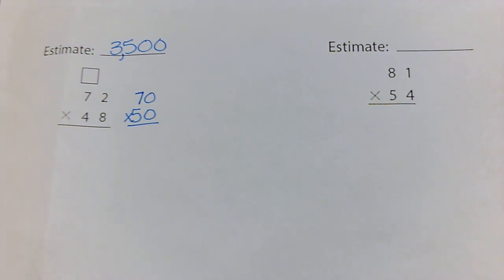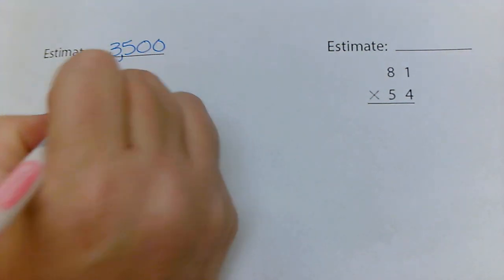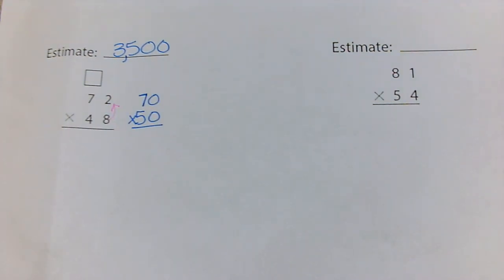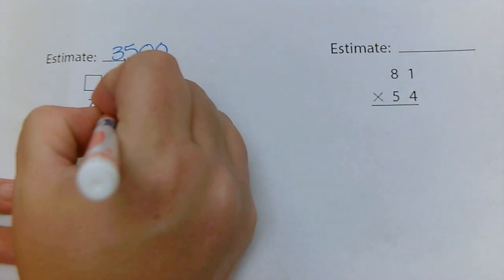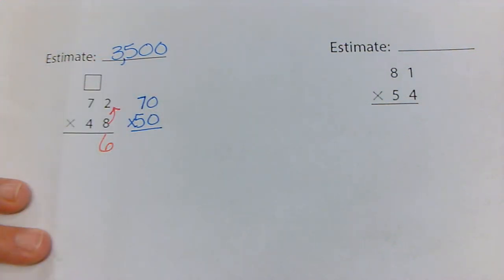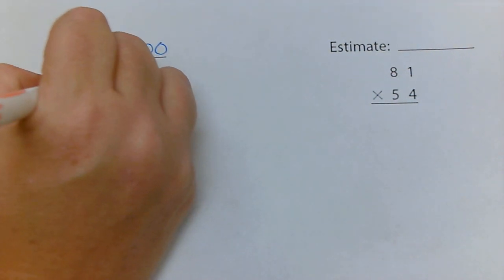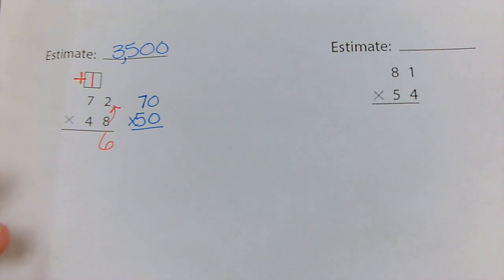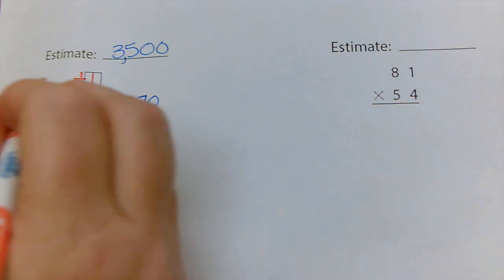Let's see if it is. First, I'm going to multiply the eight — the eight talks to each of the numbers on top. Eight times two is 16, so I put the six here because I can only put one digit in each place value, and I carry the one. Then eight times seven is 56, plus one is 57.